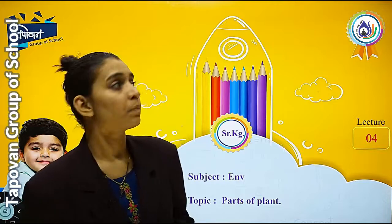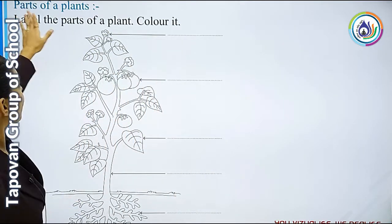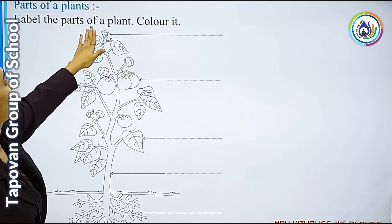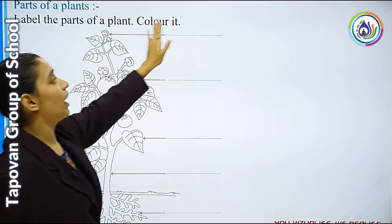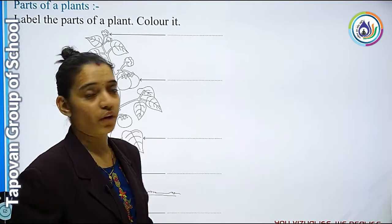आप सारे students ने plants, trees, वो सारी चीज़ें आपने देखी हैं. तो आज हम उनके Parts के बारे में सीखेंगे — उनके अंदर कौन-कौन से Parts आते हैं. देखिए, Parts of a Plant — Label the Part of a Plant, color it. इसके अंदर color करना आपका homework है, और यहाँ पे जो answers लिखने हैं वो मैं आपको लिखवाऊंगी.